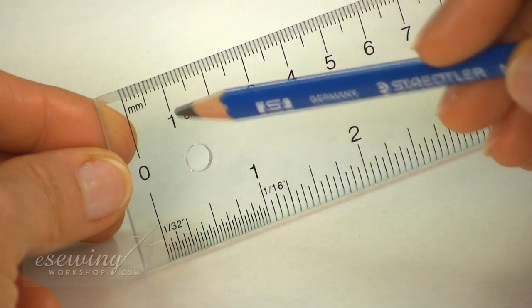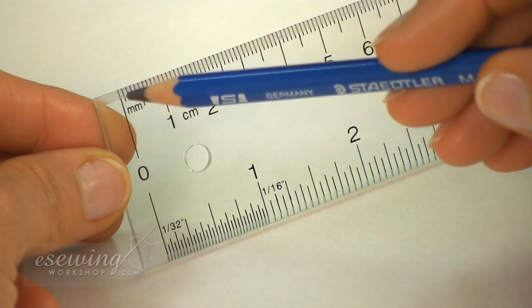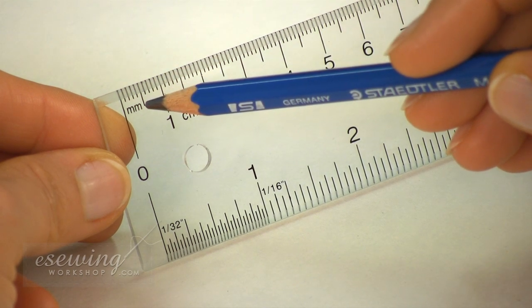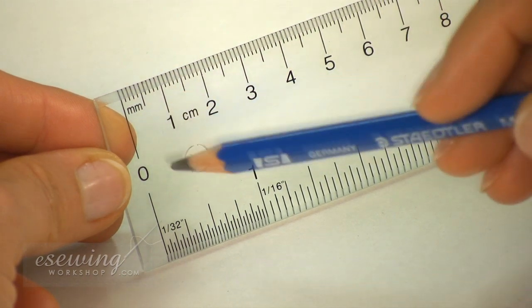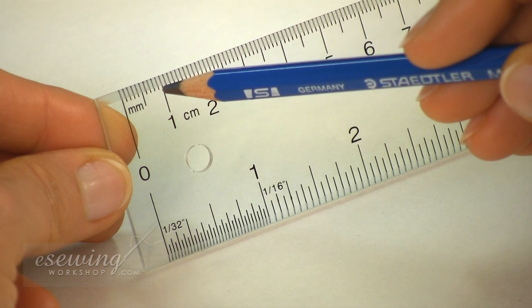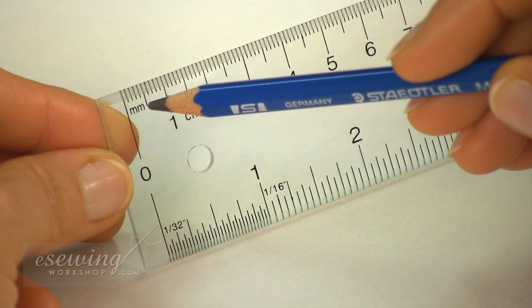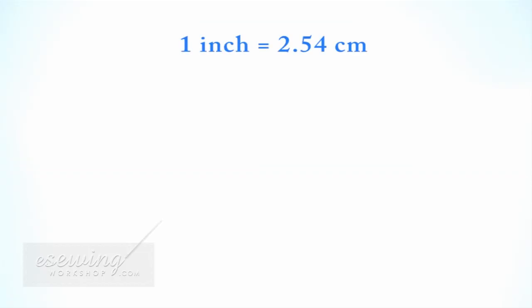The longer lines mark the whole numbers, these short lines mark the millimeters, and the midpoint is a little longer. From this line to this line is 10 millimeters, therefore the midpoint is 5 millimeters. One inch is exactly 2.54 centimeters. In the metric system, 10 millimeters make a centimeter, 100 centimeters make a meter.